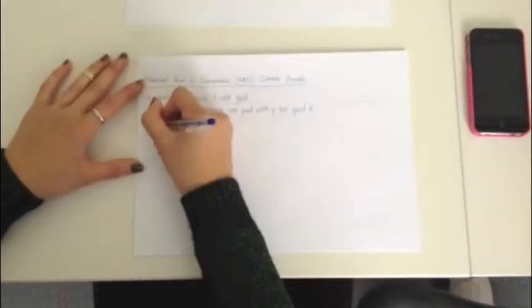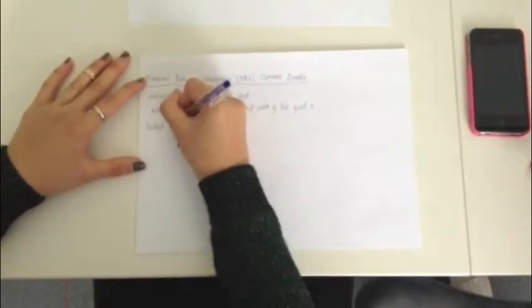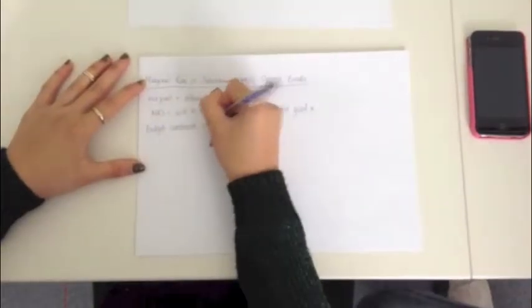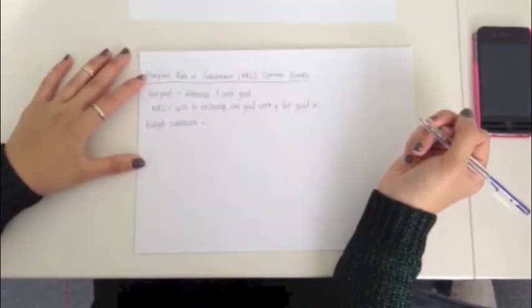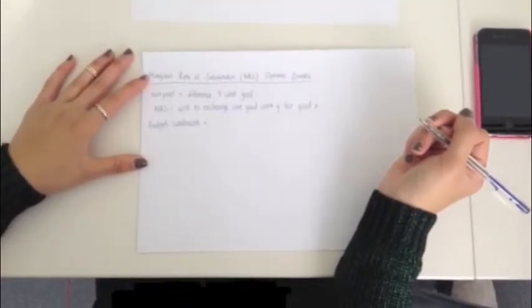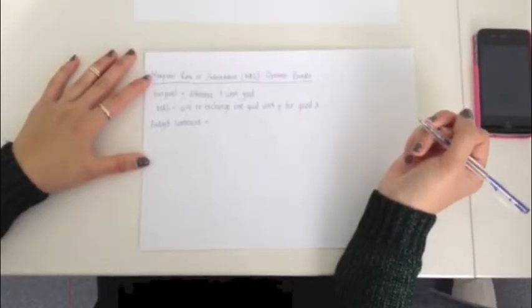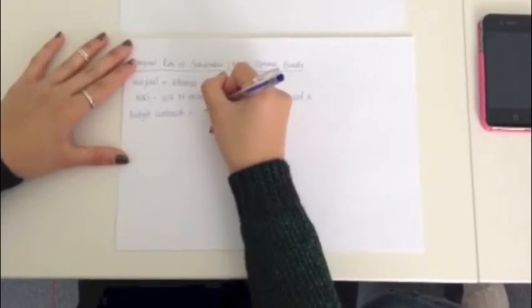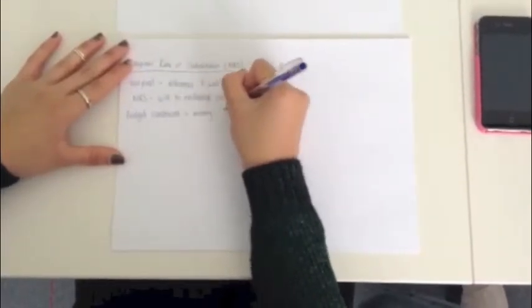Because we're talking about the optimal bundle, we also have to define budget constraint. The budget constraint is the line on which and under which all the affordable bundles lie, because that is the amount of money you have. It's your budget for good X and good Y.